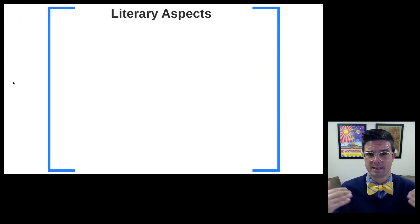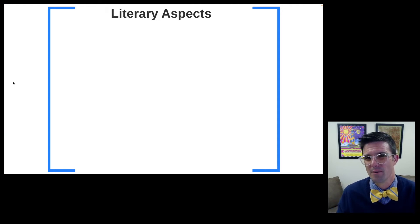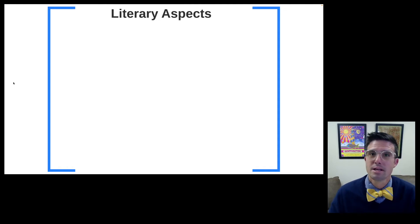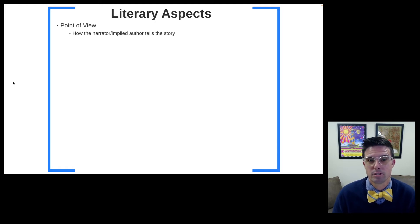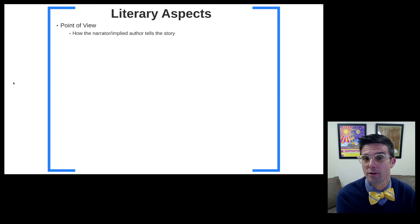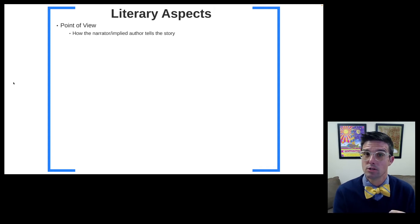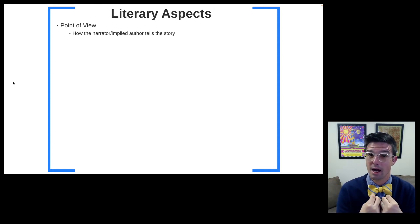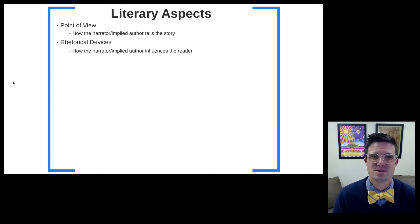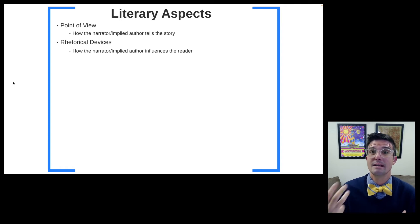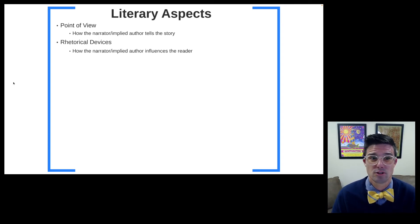To dig a little deeper on the who, what, when, where, and why in literary terms, narrative criticism is going to be concerned with things like point of view — how the narrator or implied author tells the story, what the narrator or implied author knows, and what they communicate to the implied audience or us as real readers. Also, what rhetorical devices are used to influence the reader to think, believe, and feel certain things.